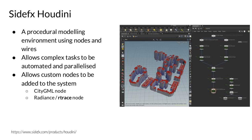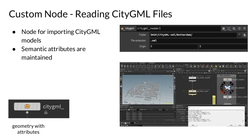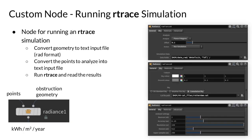In order to support this workflow, we have developed two plugins: a plugin for importing CityGML models, which imports both the geometry data and the semantic attributes from the CityGML model; and a plugin for executing R-Trace simulations, which includes a graphical user interface for configuring various simulation settings.